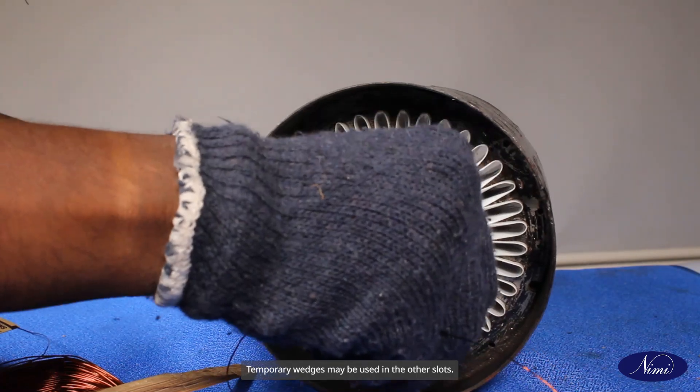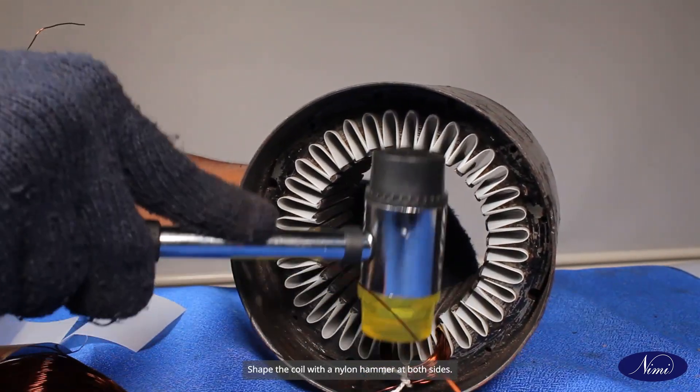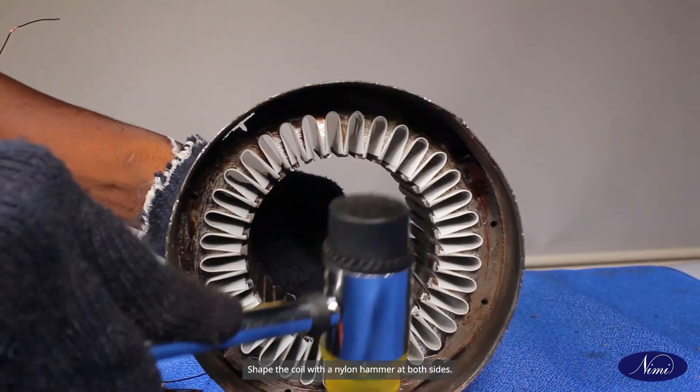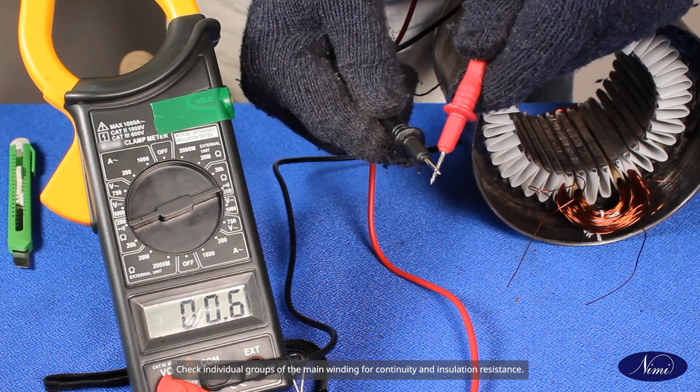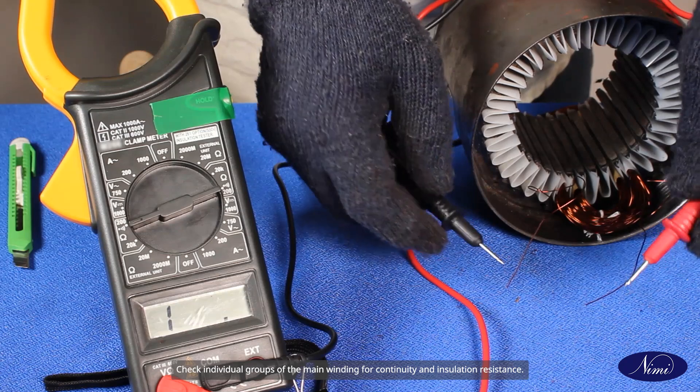Temporary wedges may be used in the other slots. Shape the coil with a nylon hammer at both sides. After placing all the main winding coils, check individual groups of the main winding for continuity and insulation resistance.